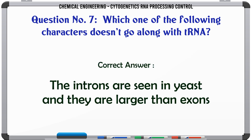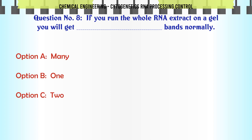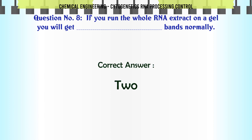Introns are seen in yeast and they are larger than exons. If you run the whole RNA extract on a gel you will get how many bands normally? A. Many, B. 1, C. 2, D. 3. The correct answer is 2.